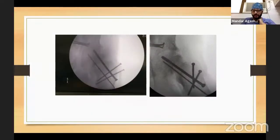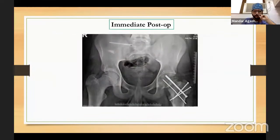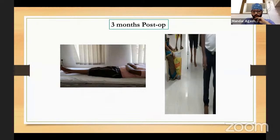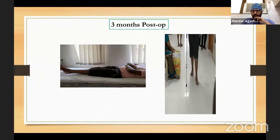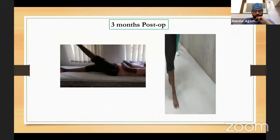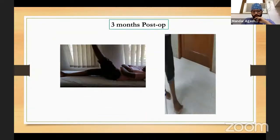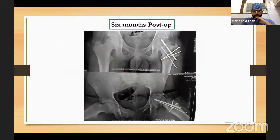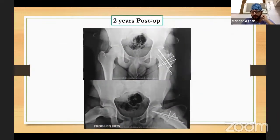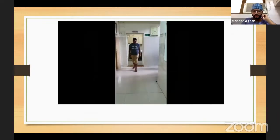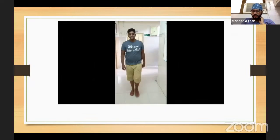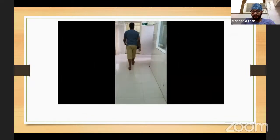Excellent correction achieved with the modified Dunn procedure in this case. Immediate post-op shows good alignment. The child started walking well at about three months with good flexion. At six months post-op — doing well with good reduction. At two years post-op, you cannot even make out which side was operated — the child is performing all activities with no lurch. My indication for modified Dunn is only for very severe slips with restricted flexion and inability to sit cross-legged or squat. As mentioned, it is an extremely technically challenging procedure with a relatively high risk of AVN.